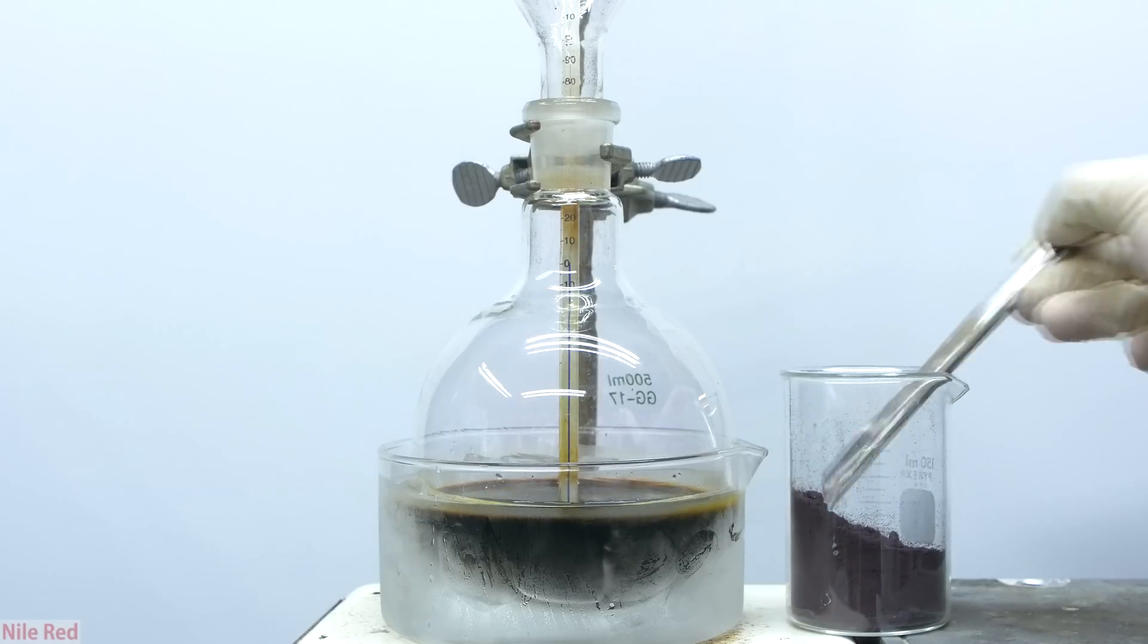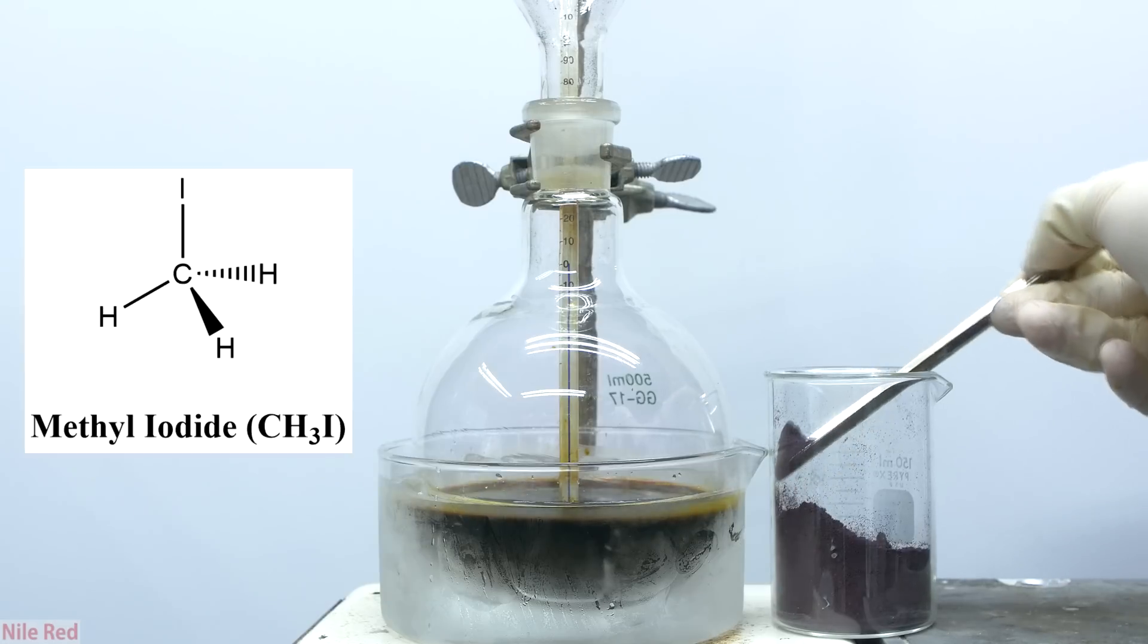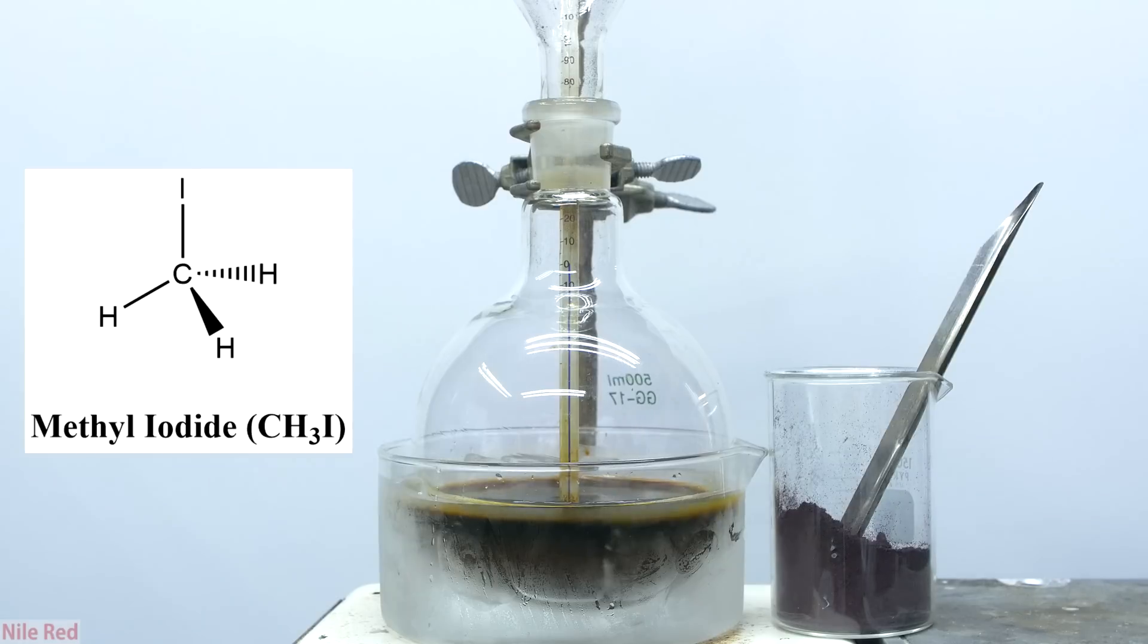Methyl iodide has almost no real-world applications and is mostly used as a chemical building block. The structure of methyl iodide is quite simple with a chemical formula of CH3I.